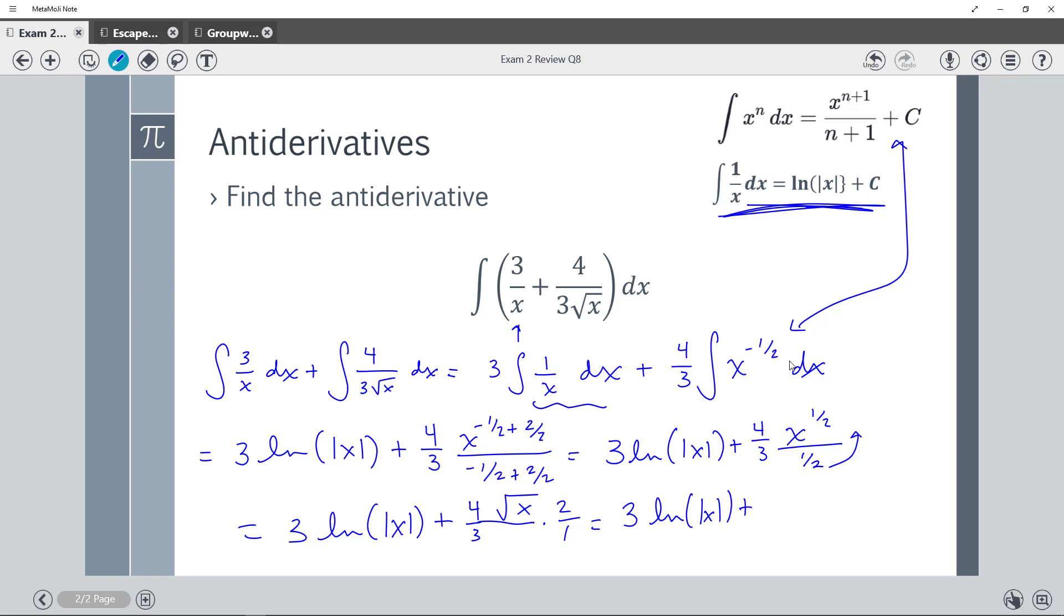Plus 4 times 2 is 8 to the square root of x over 3. And I wait till my final step to add the plus C.